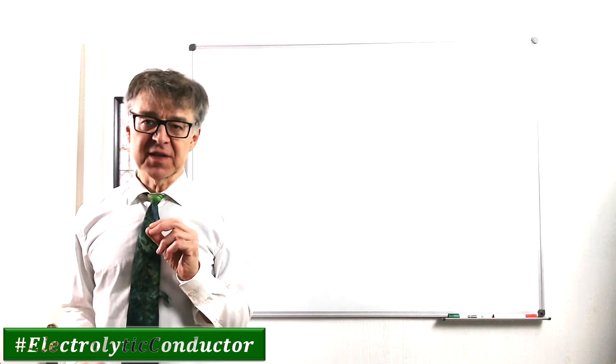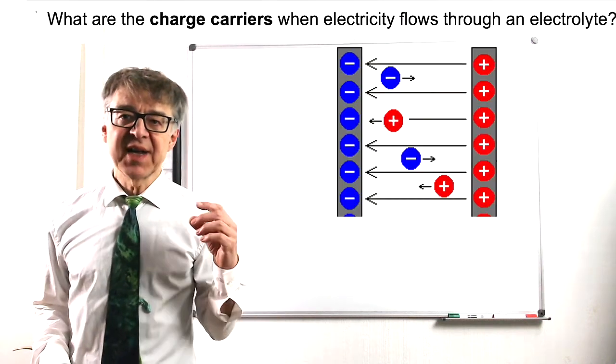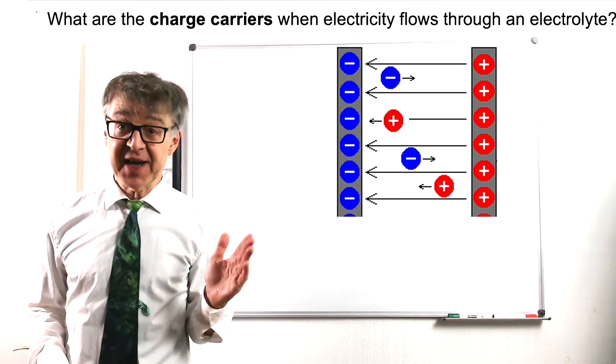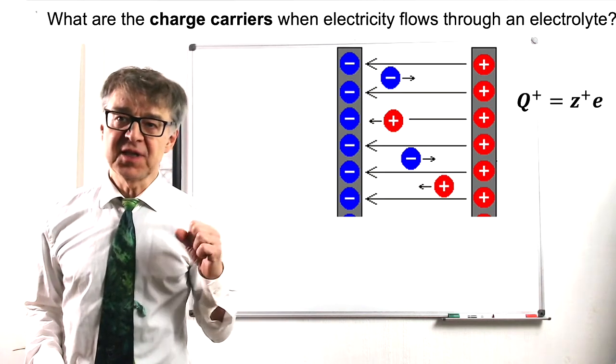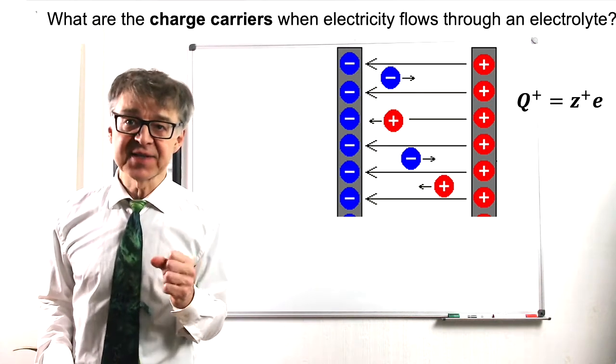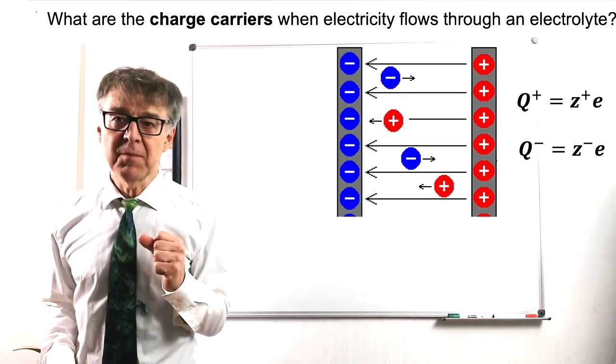Electrolytes are ion conductors. In electrolytes, charge is transferred by positively charged cations, charge Z plus times E, and negatively charged anions, charge V minus times E.